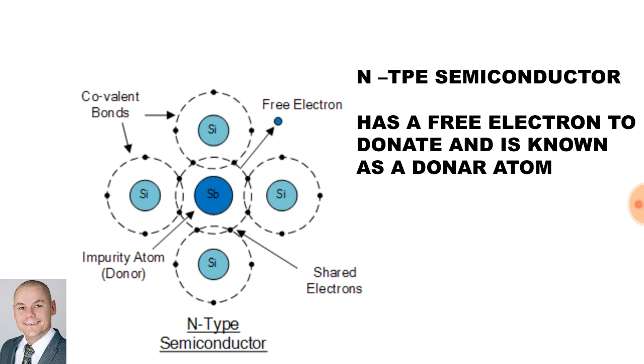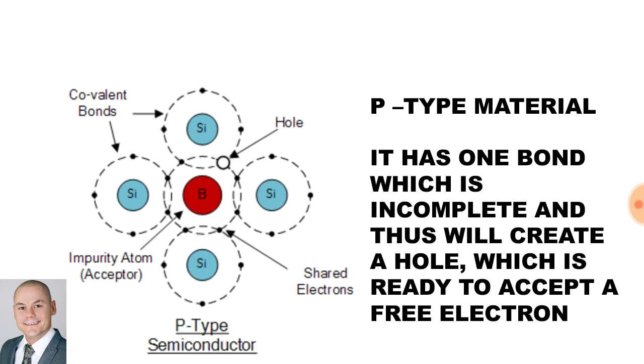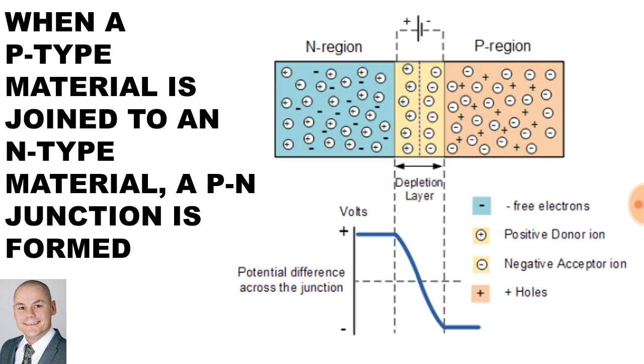An n-type semiconductor has a free electron to donate and is known as a donor atom. A p-type material has one bond which is incomplete and thus will create a free hole which is ready to accept and is known as an acceptor. When p-type and n-type is joined together, we end up with something called the depletion region.